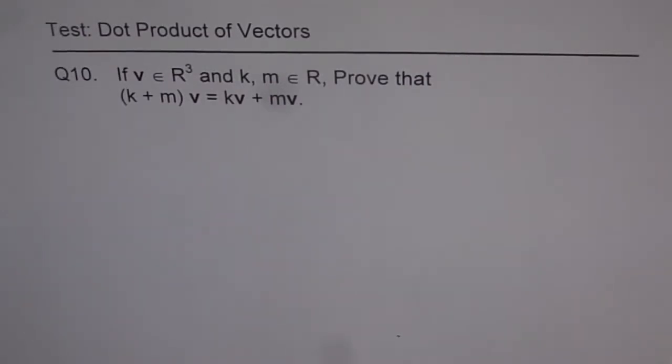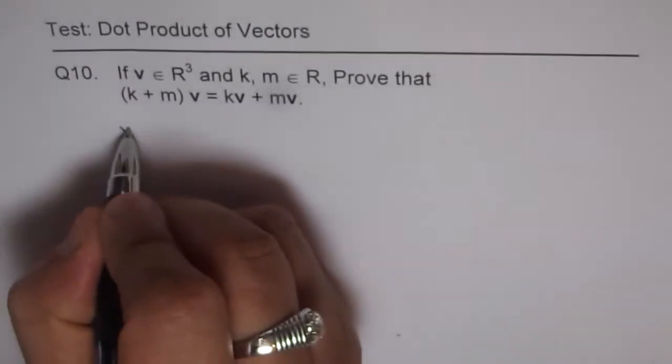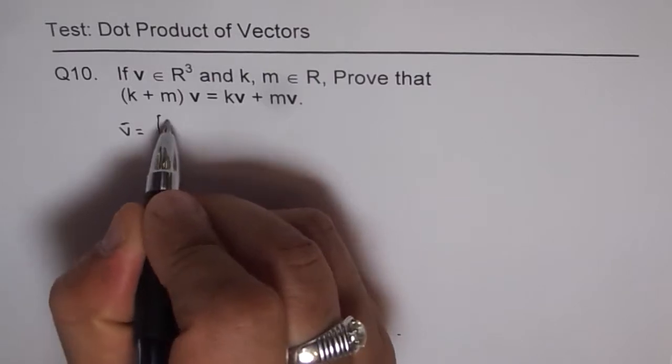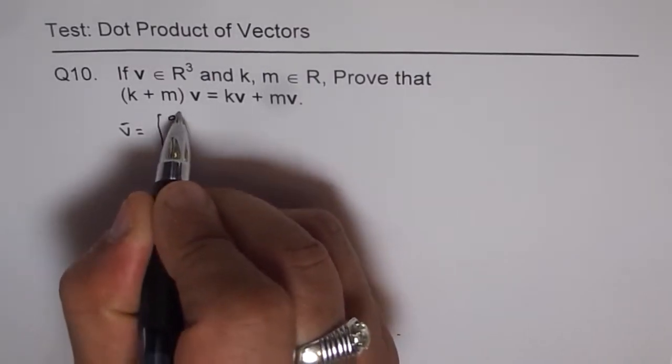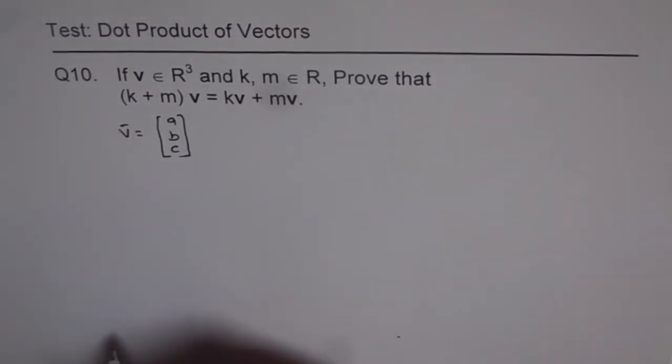Now, basically, we are given vector v here. And let us assume that vector v equals (a, b, c). So that will help me to do this kind of product. So this is a distributive property, basically, and we are trying to prove that.